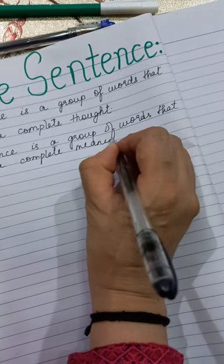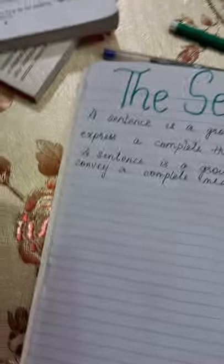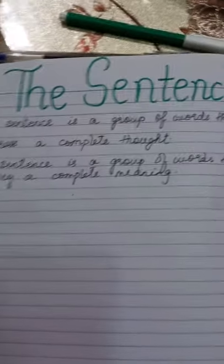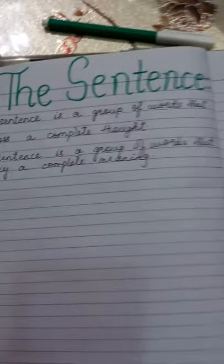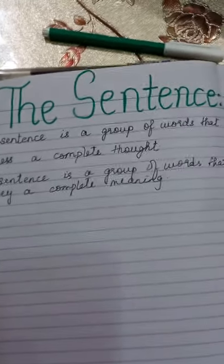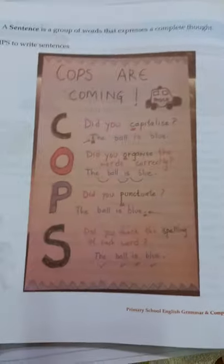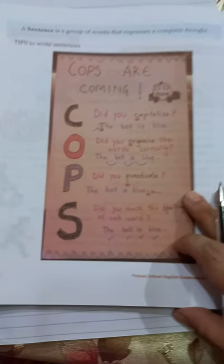Anything that we want to say, when we want to convey it, it must have a sense — it must be in the form of a sentence. A sentence is a group of words that express a complete thought, a complete meaning. These are all basic definitions of a sentence. Sentences are made to convey our feelings, to convey our thoughts, to express ourselves.